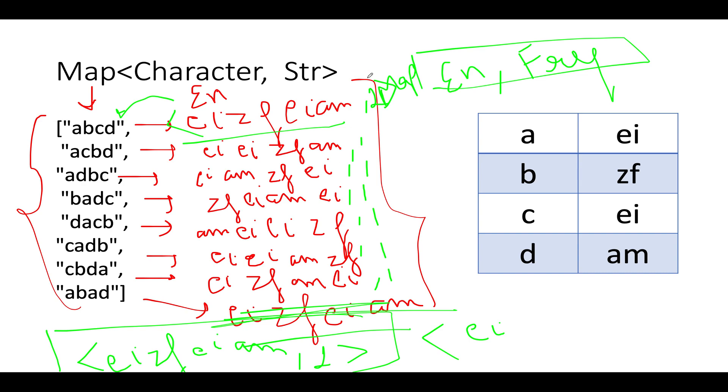If it does exist, then I will check what is the frequency value held in my map. Here the frequency value is 2. That means it can be decrypted into 2 possible strings, one ABCD and the other one is ABAD. And this is what I need to return.